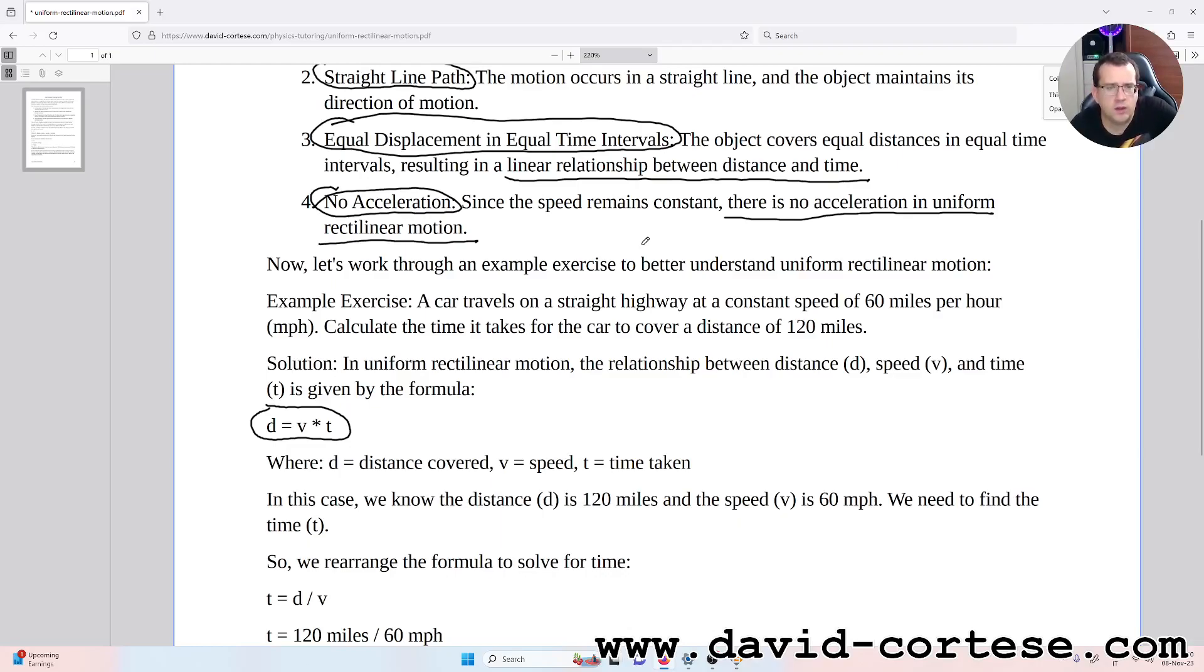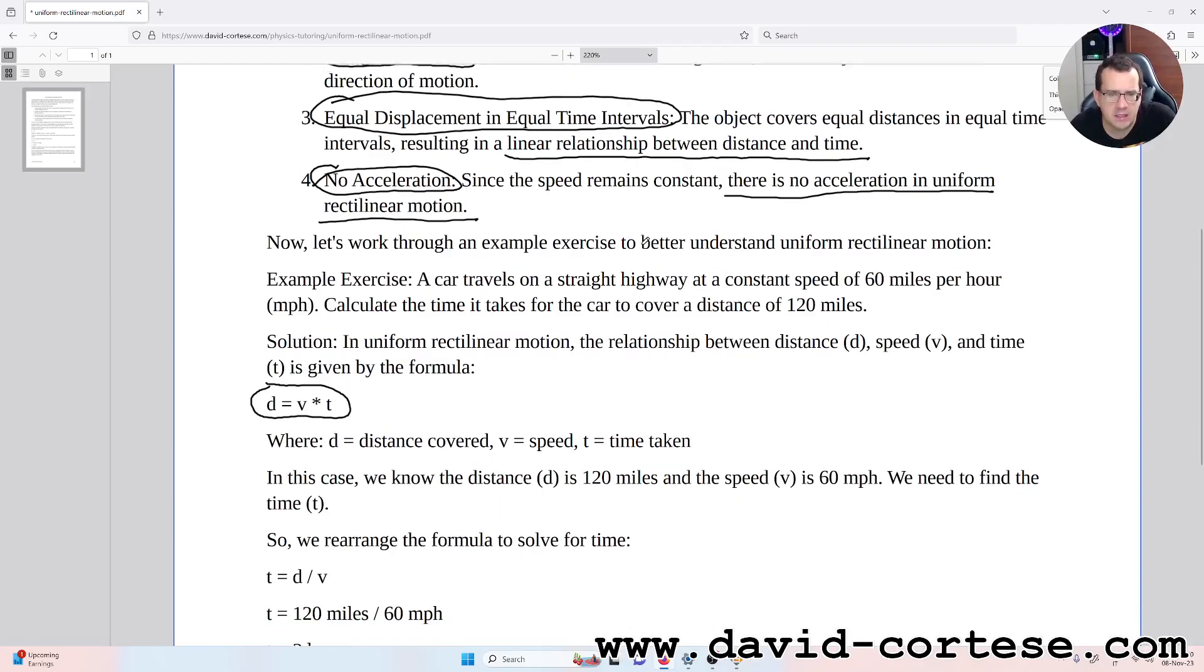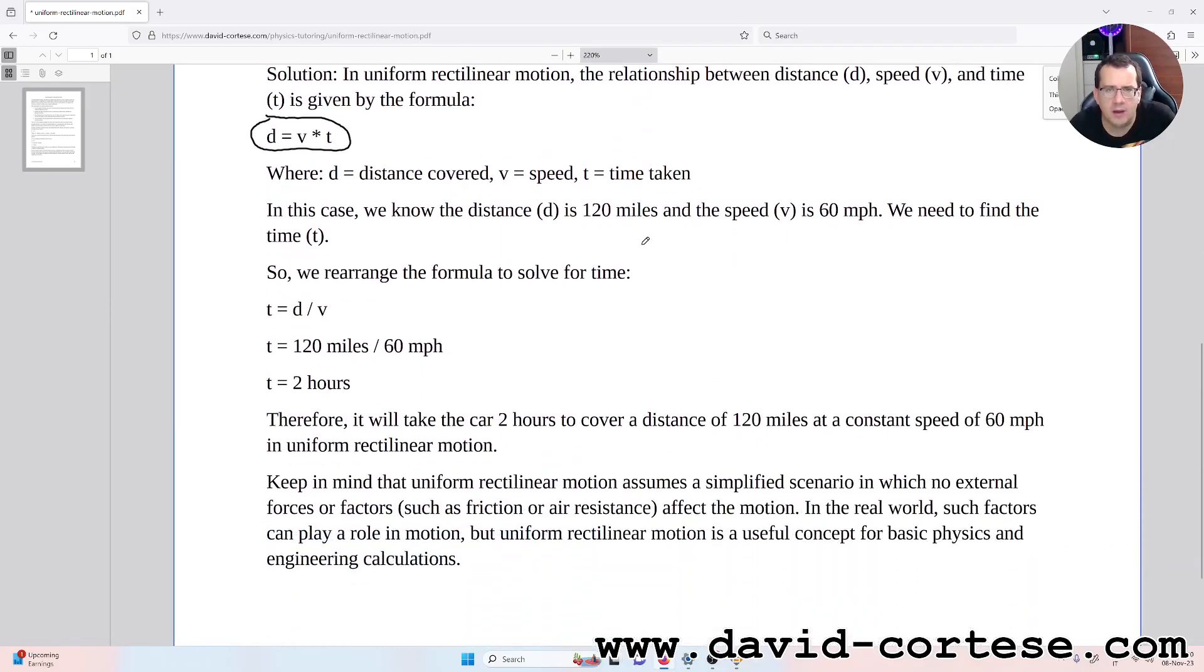In this case, we know the distance d is 120 miles and the speed v is 60 miles per hour. We need to find the time t. So we arrange the formula to solve for time: t = d / v. t = 120 miles / 60 mph. So t = 2 hours.